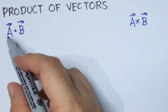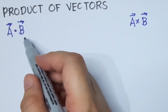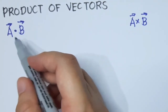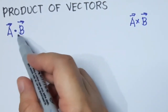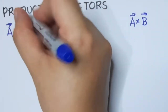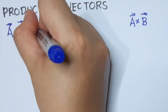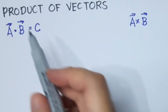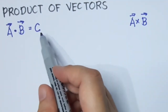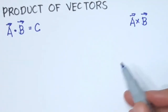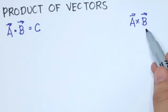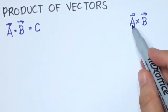A dot b is also called the scalar product, because if we multiply two vectors using the dot product, the answer will be a scalar — just a magnitude and a unit. If we go to the cross product, also called the vector product, if we multiply a cross b, the answer is another vector, which is vector c.